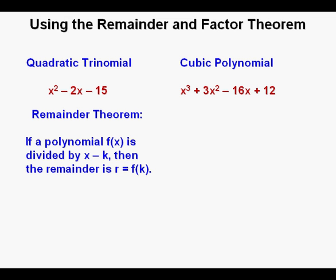And this is the theorem. If a polynomial f of x is divided by x minus k, then the remainder is r equals f of k, f of k meaning a function of a certain number that in this formula we call k.